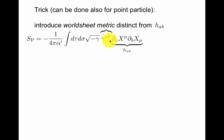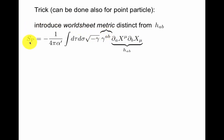Polchinski also discusses a trick for the point particle — here I will only discuss it for the string. Let's introduce a two-dimensional worldsheet metric — we call it gamma. It's distinct from the induced metric, little h, that we had before. This is a new object; it did not exist in the Nambu-Goto action. Forming this is called the Polyakov action, even though Polyakov didn't really invent it, as discussed in Polchinski.